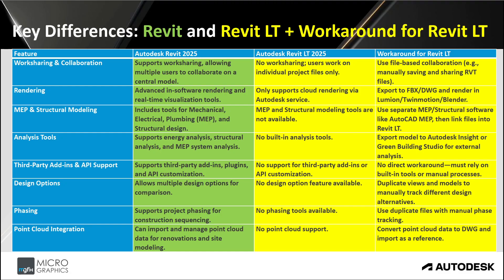Now the key differences between Revit and Revit LT, plus workaround options for Revit LT. There are times where Revit LT is exactly what you need, but perhaps you would like to use your Revit models with Lumion, for example — then a workaround is ideal. Work sharing and collaboration: the full version supports work sharing, allowing multiple users to collaborate on a central model. Revit LT has no work sharing — users work on individual project files only. The workaround for Revit LT is file-based collaboration: manually saving and sharing your Revit files.